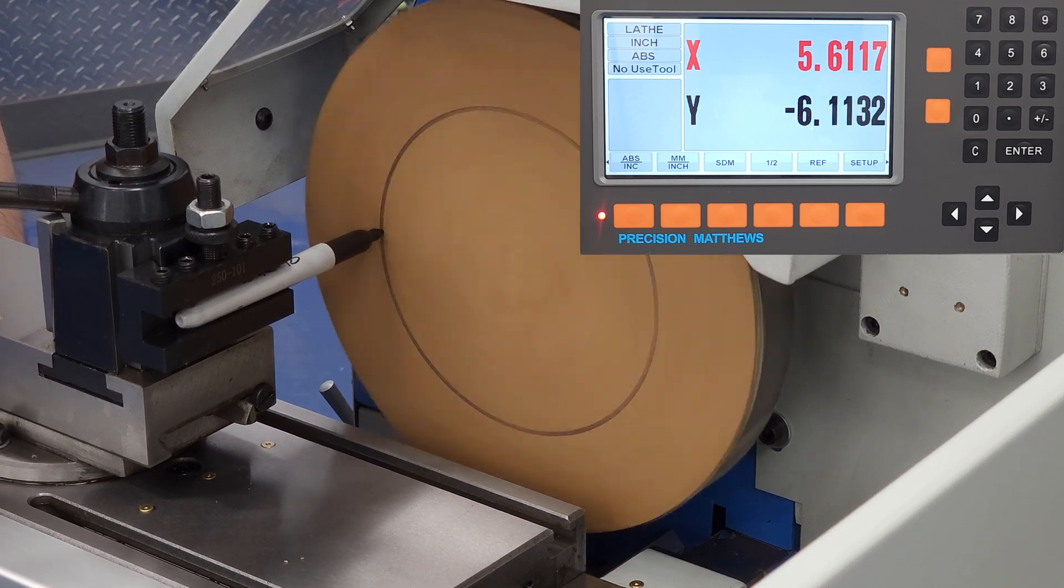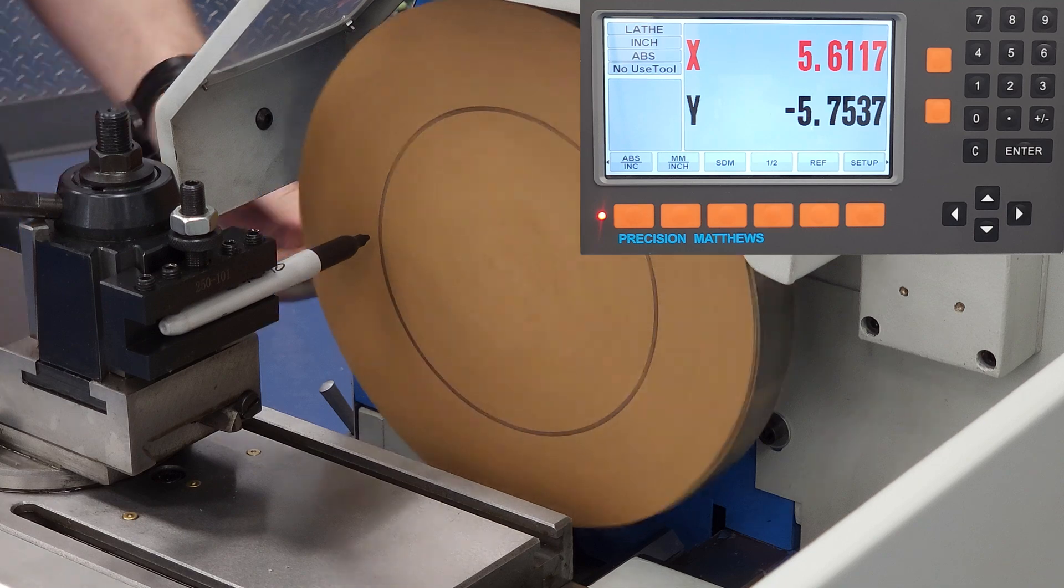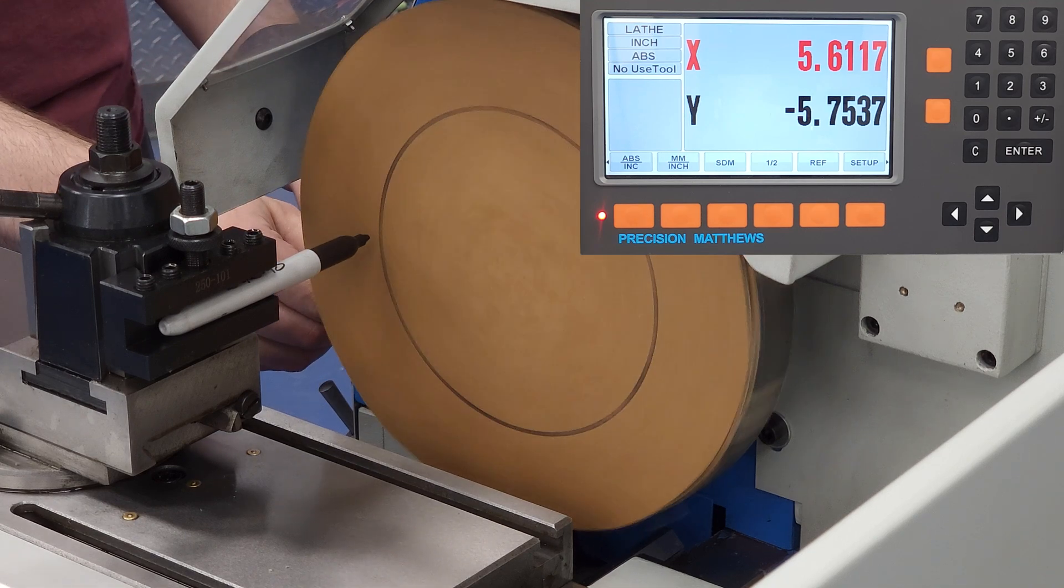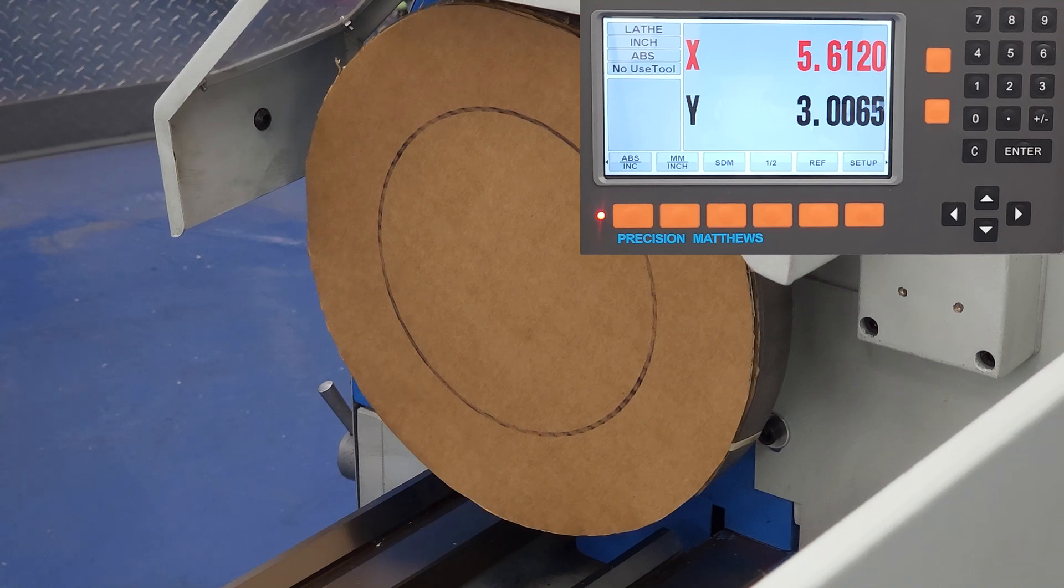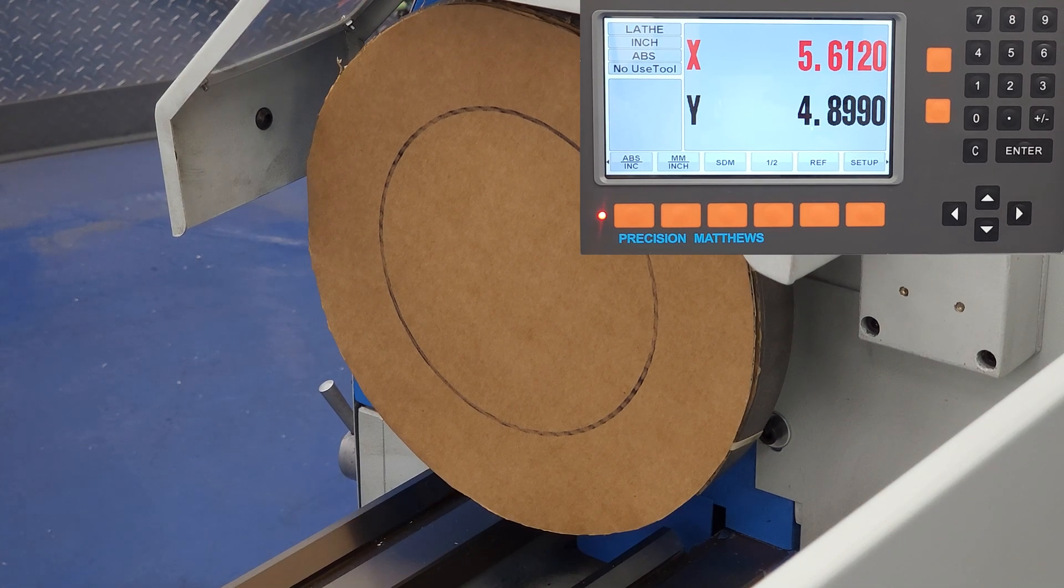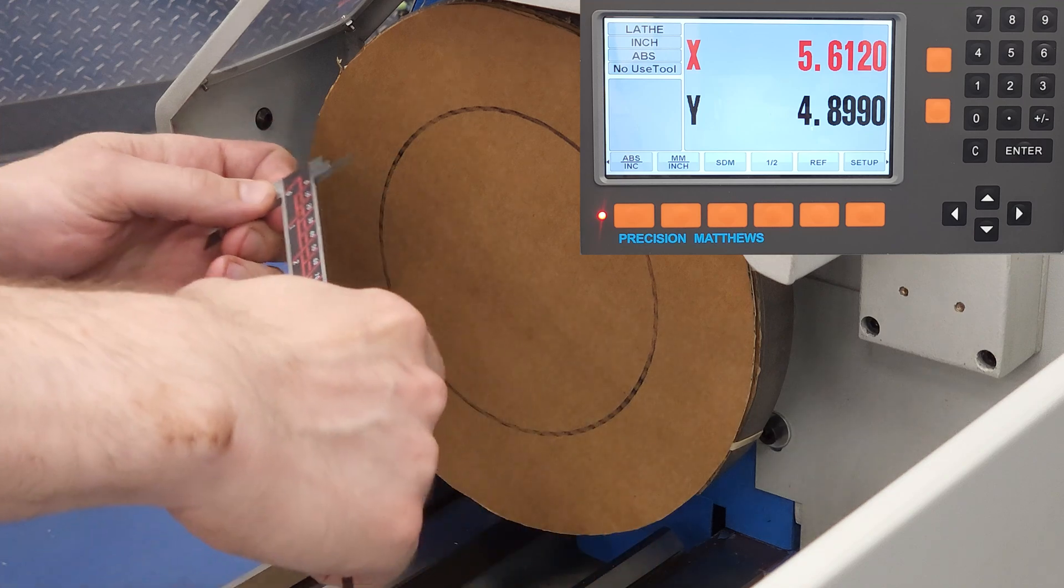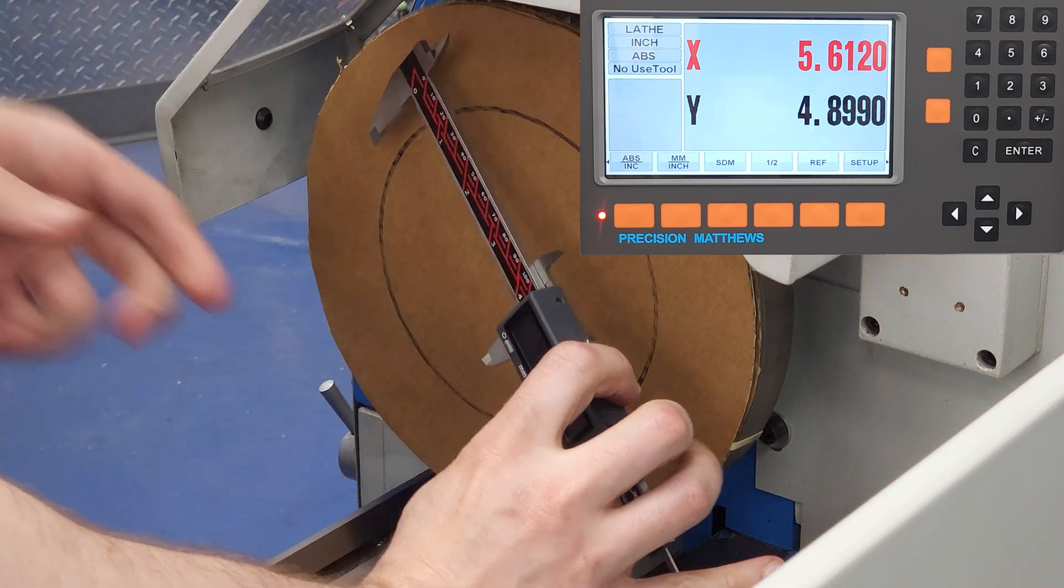And we'll start with the diameter method. In our DRO, you can tell it's in diameter mode because the x-axis turns red. On other DROs, it displays the Greek letter phi, or an indicator light illuminates. Either way, there's going to be some indication that you're in diameter mode.